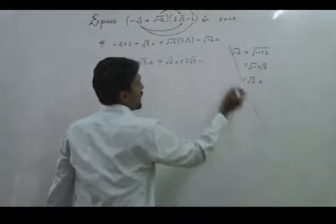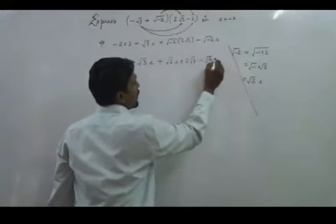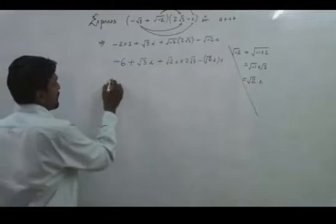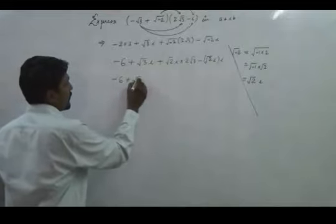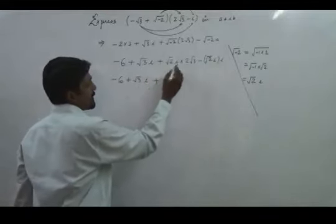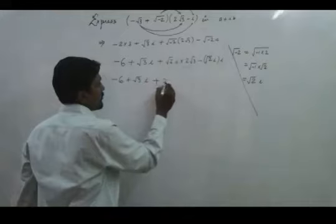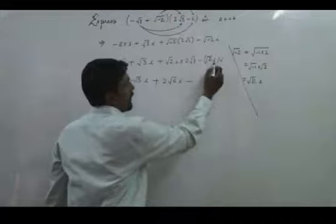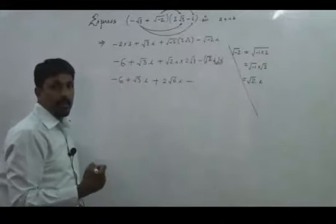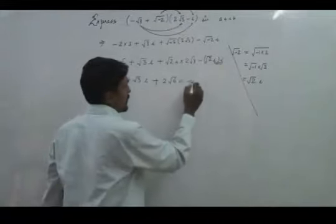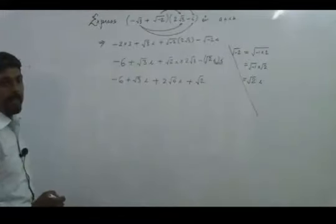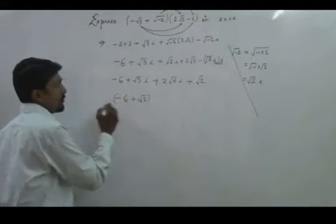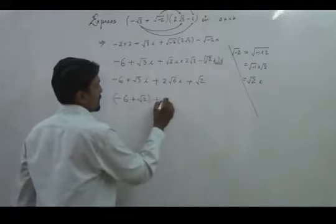Similarly, √2·i multiplied by i gives i squared. It gives minus six plus √3·i plus 2√6·i minus i·i. Since i squared equals minus one, it gives plus √2. Now collecting all real parts: it is minus six plus √2, and the imaginary part is √3 plus 2√6.